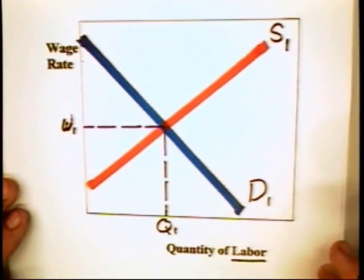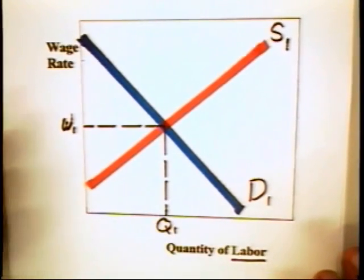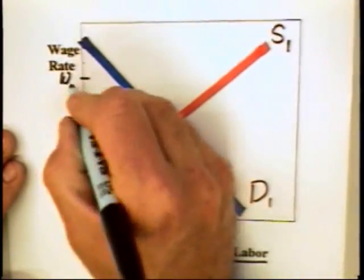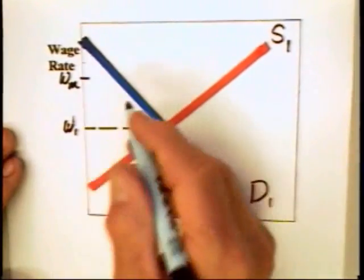This can be measured in number of hours worked or the number of workers who are employed. Now, in order to understand the minimum wage law, all we need to do is say,